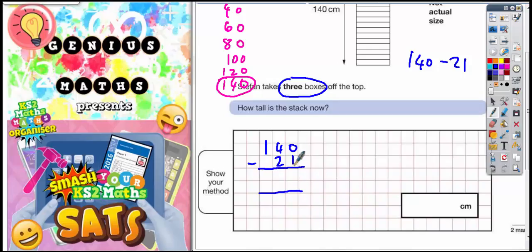0, take away 1, we can't do. So let's borrow from the 4. If you borrow from the 4, it becomes a 3. And the 1 you borrowed turns the 0 here into a 10.